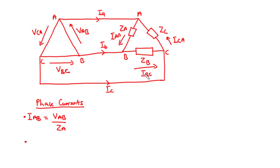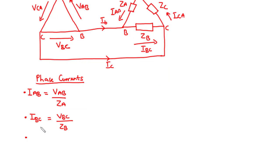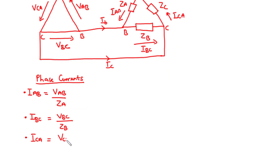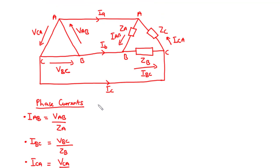Moving on to the second phase, the phase current Ibc equals Vbc divided by Zb. And then for the last phase, the current Ica — considering the outer loop — equals Vca divided by Zc.